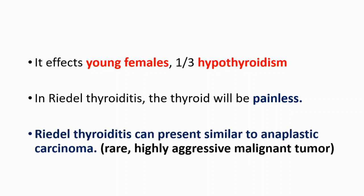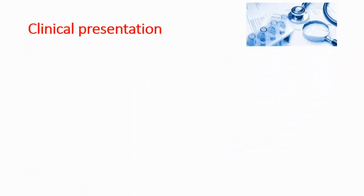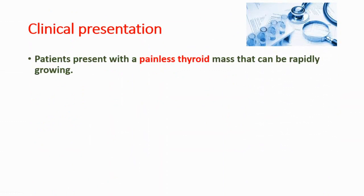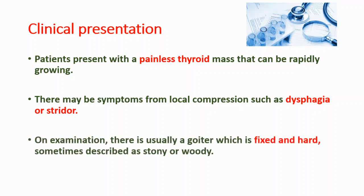Riedel's thyroiditis can present similarly to anaplastic carcinoma. Anaplastic carcinoma is a rare, highly aggressive malignant tumor. Clinically, patients present with a painless thyroid mass that can be rapidly growing, and there may be symptoms from local compression such as dysphagia — difficulty swallowing — and stridor, which is noisy breathing.